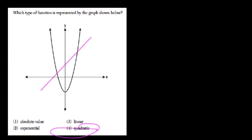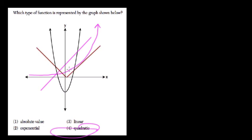Exponential would grow super quick and never cross zero. Here would be fractions, fractions, and then it would eventually shoot up and exceed the other types of graphs. The absolute value function will look like a V in some way. And that's it.